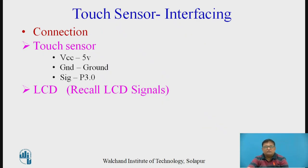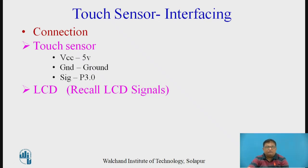Now, coming to the interfacing with the 8051: the possible connection is as follows. For the touch sensor, VCC is connected to plus 5V, the ground pin is grounded, and the SIG pin is connected to pin P3.0 of the 8051 as an example. To display whether a touch has occurred on an LCD, we will interface the LCD as well.